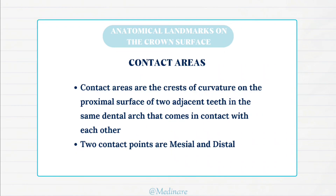Contact areas. Contact areas are the crests of curvature on the proximal surface of two adjacent teeth in the same dental arch that come in contact with each other. The term contact point is interchangeable with contact area, but contact point refers to small-size contact seen usually in newly erupted teeth, whereas contact area refers to a broad contact area produced due to constant rubbing of the proximal surfaces as age advances. There are two types of contact areas: mesial and distal. The deciduous second molar and permanent third molar only have one contact area, which is the mesial contact area, because distally they don't have any tooth.